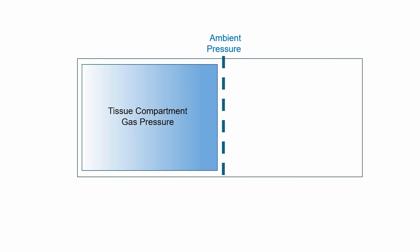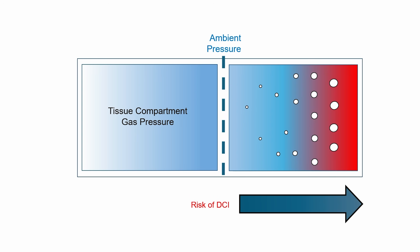How does it calculate the decompression that you need to do? What Bühlmann said is that each tissue compartment can tolerate having a gas pressure higher than the pressure in the ambient environment - effectively, for us, that means the depth of water that we're in. That higher pressure in the tissue compartment is called supersaturation. The level of supersaturation that each tissue can accept before you run the risk of decompression illness is called the M value.